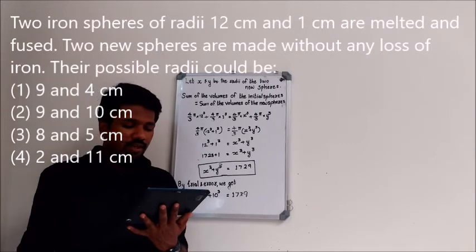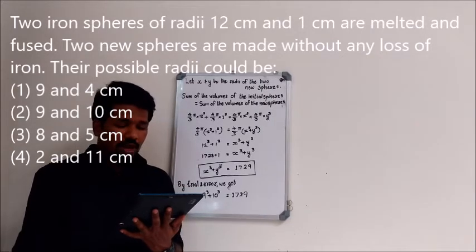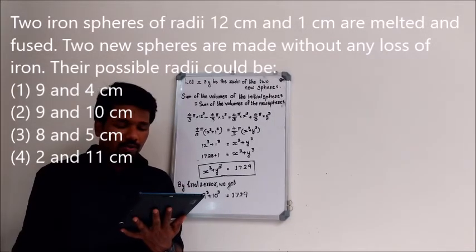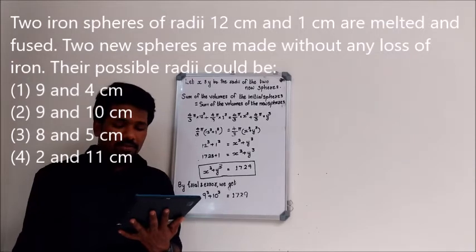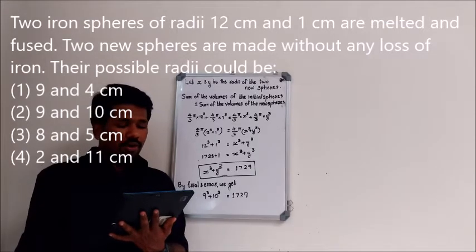Two iron spheres of radii 12 cm and 1 cm are melted and fused. Two new spheres are made without any loss of iron. Their possible radii could be.